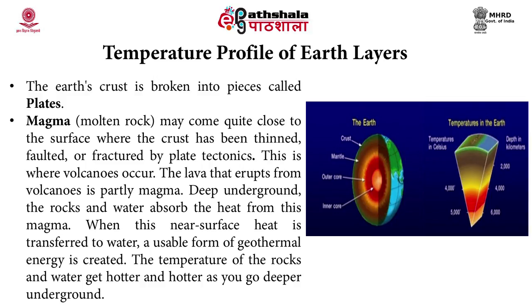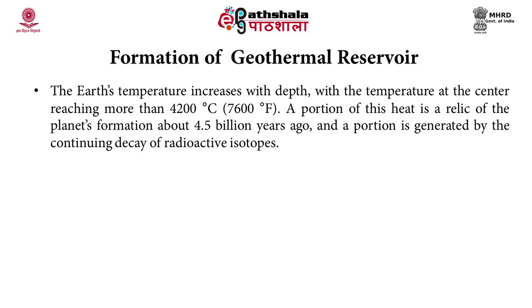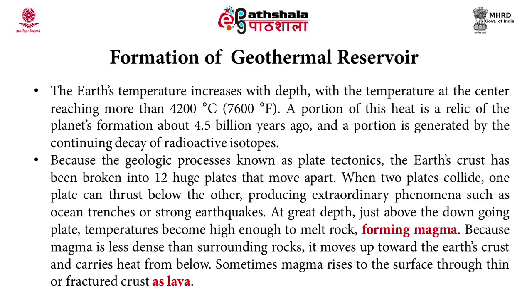The earth's temperature increases with depth, with the temperature at the center reaching more than 4200 degrees centigrade. A portion of this heat is the residue of the planet's formation about 4.5 billion years ago, and a portion is generated by the continuing decay of radioactive isotopes. Because of geologic processes known as plate tectonics, the earth's crust has been broken into 12 huge plates that move apart. When two plates collide, one plate can thrust below the other, producing extraordinary phenomena such as ocean trenches or strong earthquakes. At great depth just above the down-going plate, temperatures become high enough to melt rock, forming magma.